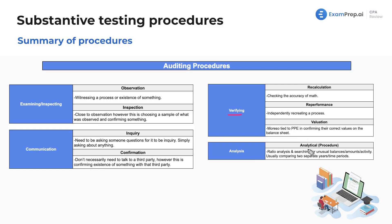Lastly, for analysis, we have analytical procedures. Analytical procedures are broken out separately due to their different nature. Those done during the planning phase are simple analytical procedures; however, if done during the testing phase, they are considered substantive analytical procedures. This involves ratio analysis and searching for unusual balances or activity, usually comparing two separate years or time periods.